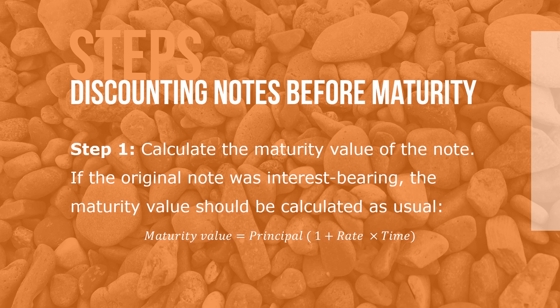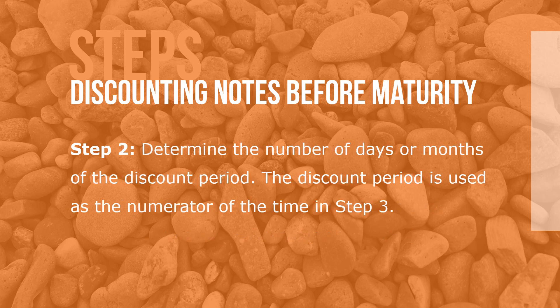Step 1: Calculate the maturity value of the note. If the original note was interest-bearing, the maturity value should be calculated as usual: maturity value equals principal times (1 plus rate times time). Step 2: Determine the number of days or months of the discount period. The discount period is used as the numerator of the time in Step 3.